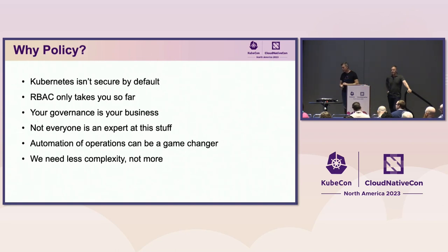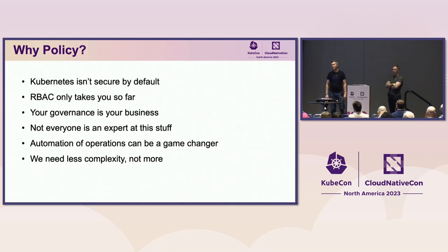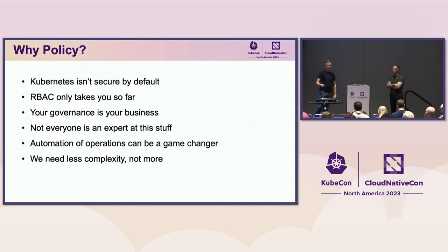For those that raised your hand that you aren't using policy today — why do we need policy? Number one: Kubernetes is not secure by default. A lot of people are surprised to hear this. There are security tools in Kubernetes, of course, but by default it does not have the security posture that's acceptable to most production environments. RBAC, which is a pivotal piece of Kubernetes security, only takes you so far. Policy can be used to extend RBAC to your specific use cases.